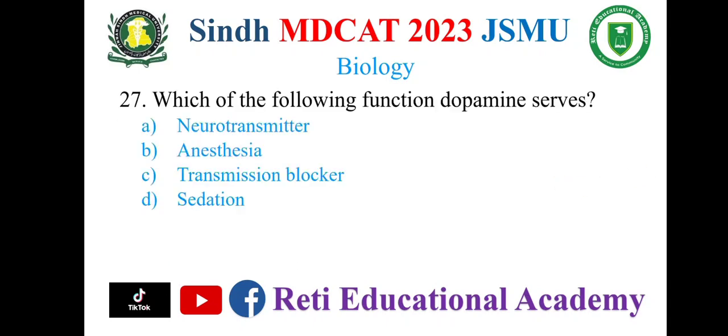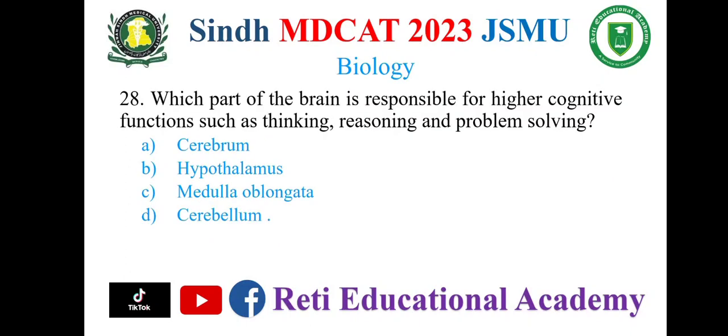Which of the following functions does dopamine serve? A. Neurotransmitter, B. Anesthesia, C. Transmission blocker, D. Sedation. The correct option is A. Neurotransmitter. Question number 28.